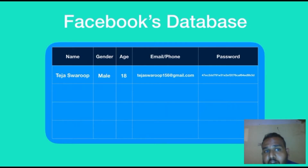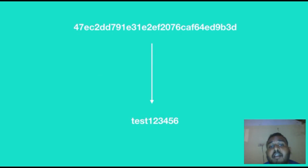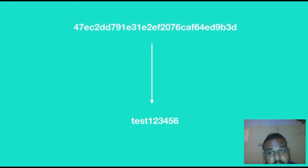If you want to log into the password, you can log into the website. Now you can see hackers in the account. What you can see is the encrypted version of the hash password — you can see the text in the account.